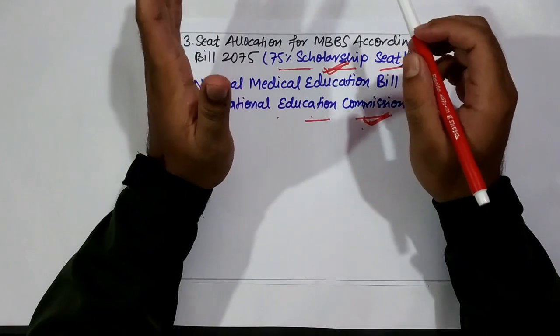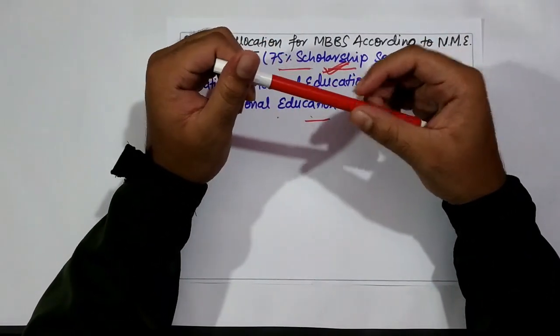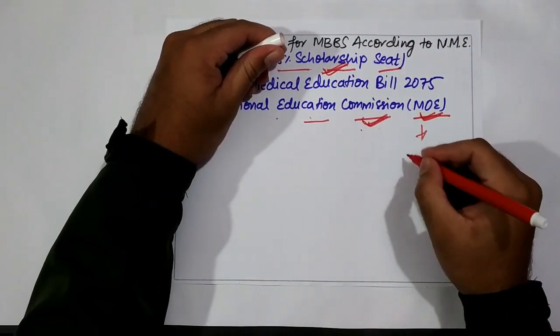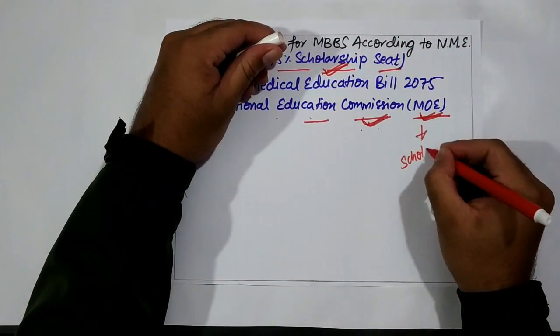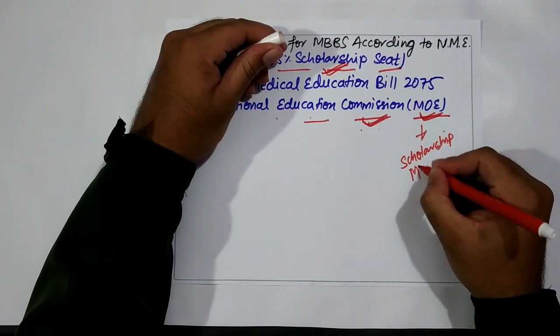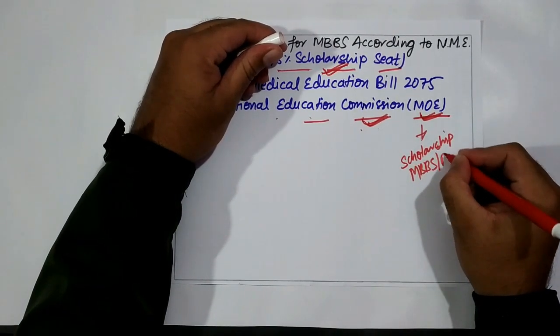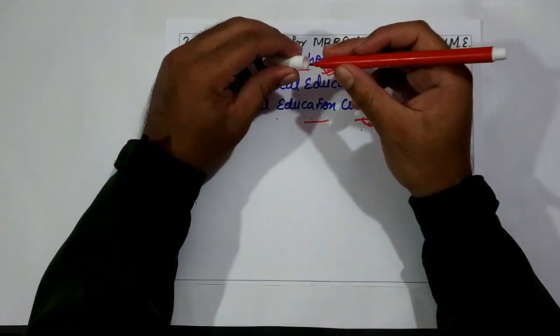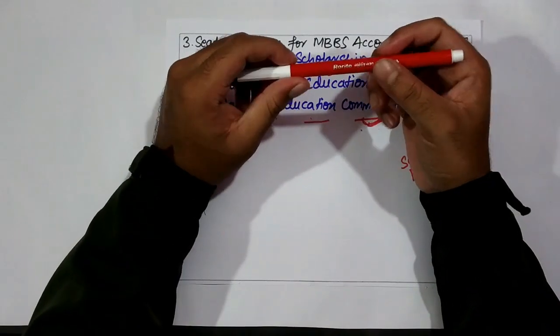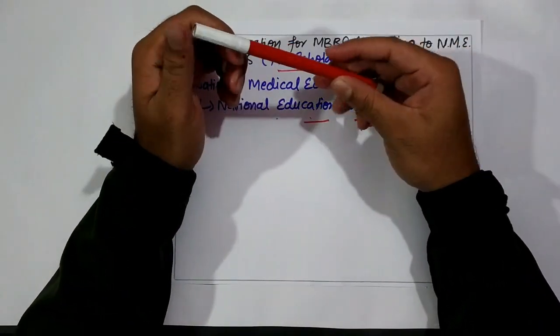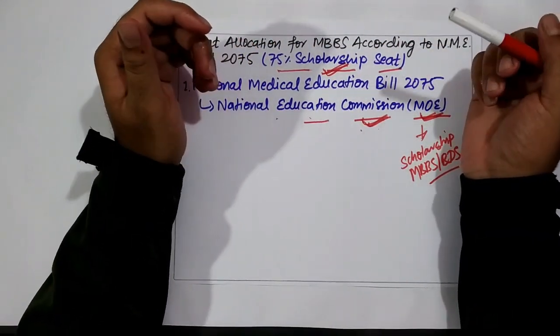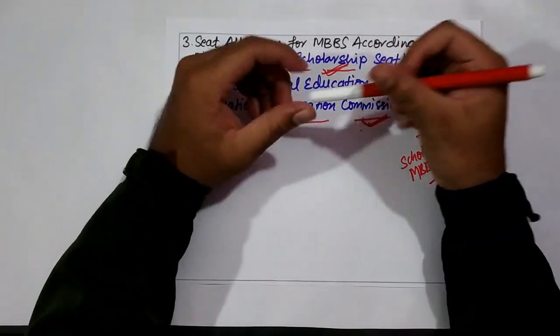However, the only official notice is from the MOE: the scholarship notice for MBBS and BDS merit list. In this notice it states about the 75% scholarship seats. That is the only official notice we have right now for the scholarship seats.